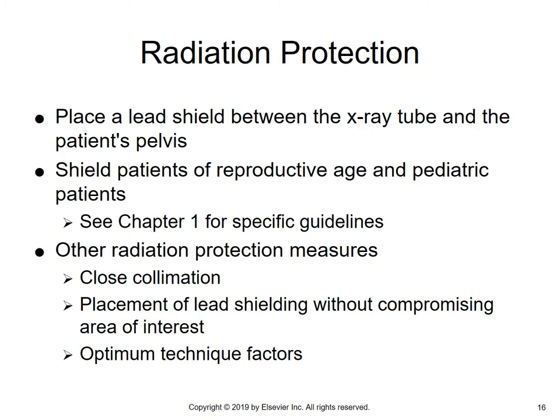For radiation protection, place a lead shield between the x-ray tube and the patient's pelvis. We want to always shield the gonads — shield patients of reproductive age and pediatric patients. Chapter 1 of Merrill's talks about specific guidelines. Other radiation protection measures: we always closely collimate, meaning to bring the beam smaller. If I tell you to increase collimation, that means to make your field size smaller. We also use placement of lead shielding without compromising the area of interest, and of course we use optimum technique factors.